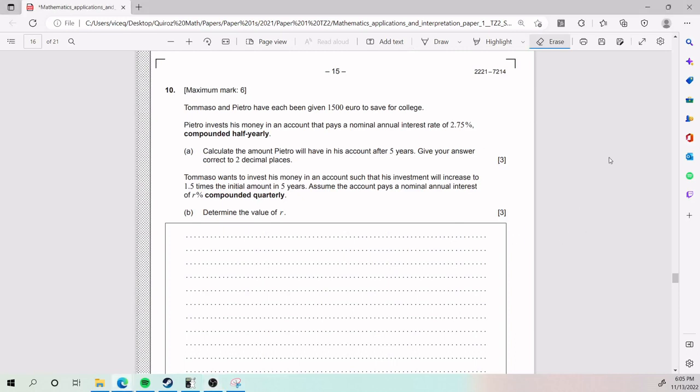For number 10, we have that Tommaso and Pietro each have been given 1,500 euros to save for college. Pietro invests his money in an account that pays a nominal annual interest rate of 2.75%, compounded half yearly. Calculate the amount Pietro will have in his account after five years. Whenever you see a problem like this and you highlight these buzzwords, you realize you're dealing with a compound interest problem. The biggest hint is that it literally says compounded half yearly.